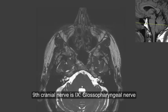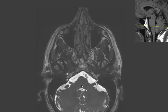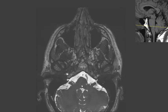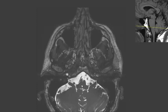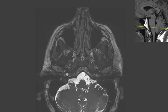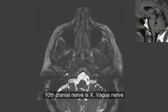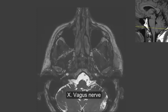Ninth cranial nerve is the glossopharyngeal nerve. Glossopharyngeal nerve, glossopharyngeal nerve. Tenth cranial nerve is the vagus nerve. Vagal motor nucleus. Vagus nerve, and this is the left vagus nerve.